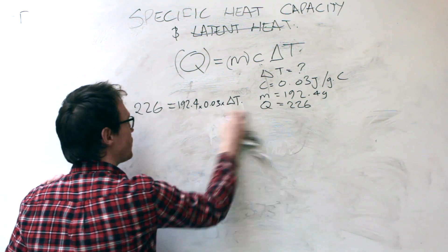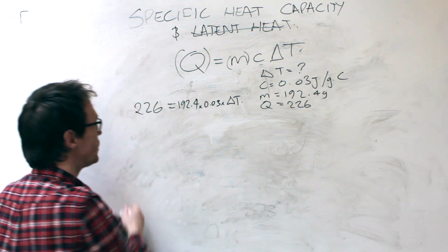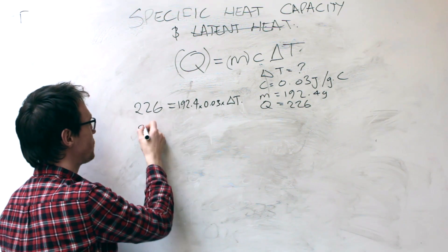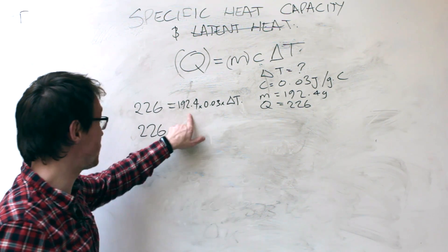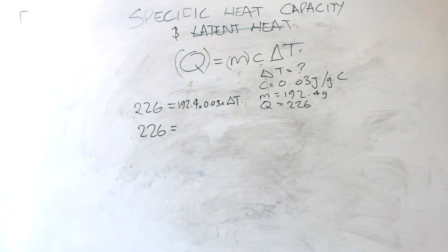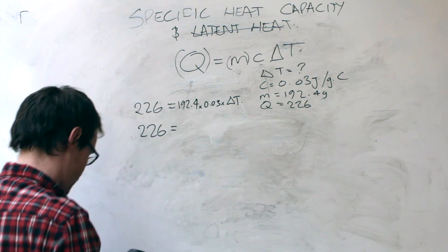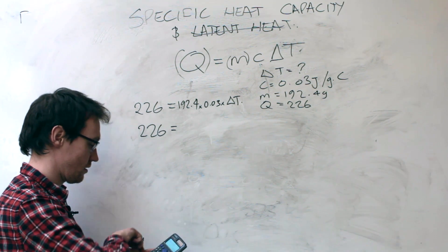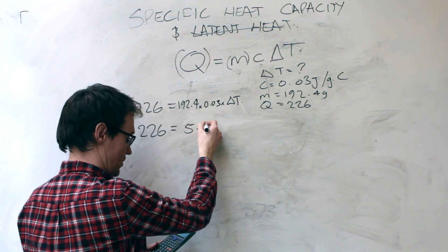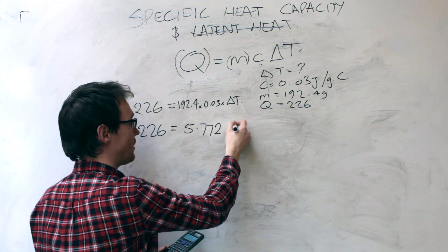Okay, so what can I work out straight away? Well, 226 is 226, and 0.03 times 192.4 is 5.772 delta T.